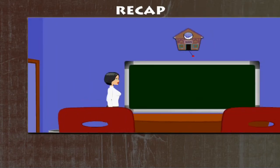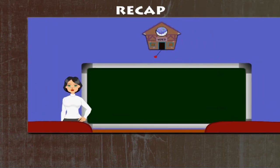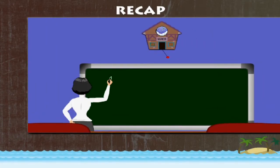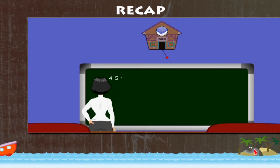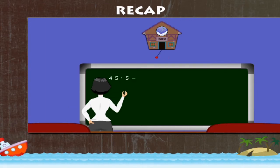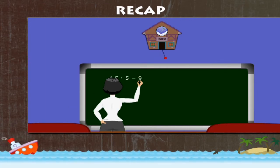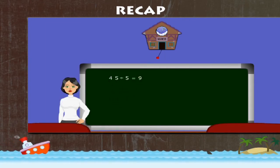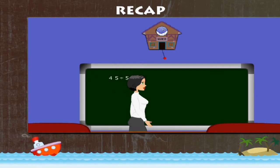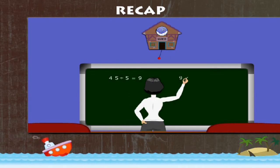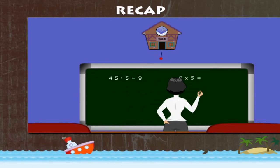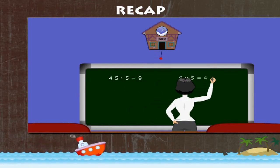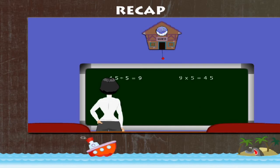Recap. Teacher Lucy takes a revision. 45 divided by 5 is equal to 9. Simple. Because 9 multiplied by 5 is equal to 45.